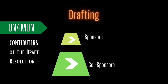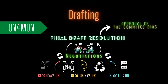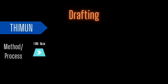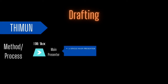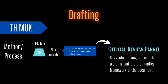After the negotiation phase, a single united DR is formed with compromises and concessions from all the blocks, followed by submission of the DR to the committee dais for approval. As the DR is approved, it is placed on the floor of the committee for possible amendments. Under THIMUN procedure, the DR is formed by blocks during their lobbying sessions with a single main presenter of the document. This document is then submitted to the official review panel, which suggests changes in wording and grammatical framework, upon which the document is finally approved and sent to the committee dais members.